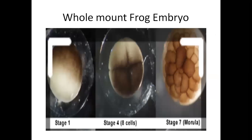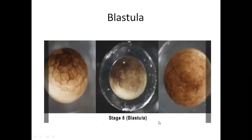These are the whole mounts of frog embryo. Maine abhi aapko cleavage, blastula, gastrula, neurula ke sections dikhaaye, ab main aapko dikha rahi hoon whole mount - poora. You can see that this is egg, cleavage start hua, four cell stage, aur jada hua toh yeh morula ban gaya hai - dikh raha hai aapko. Blastula ke andar agar hum whole mount ko dekhenge - yeh morula hai. This is eight cell stage blastula.